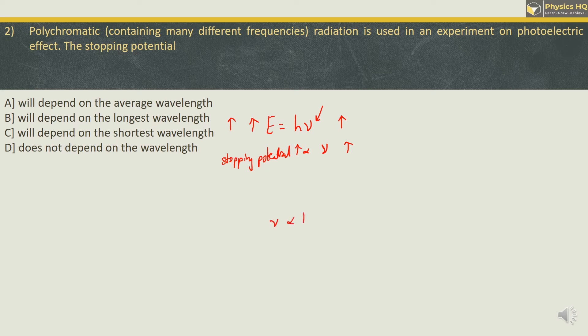Now we are supposed to find the relation in terms of wavelength. We know that frequency is inversely proportional to wavelength. Therefore, the stopping potential will be highest for the electron which is having the lowest wavelength. So the correct option will be the one with the shortest wavelength. Let us check out the next MCQ.